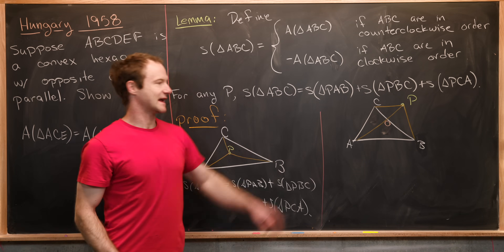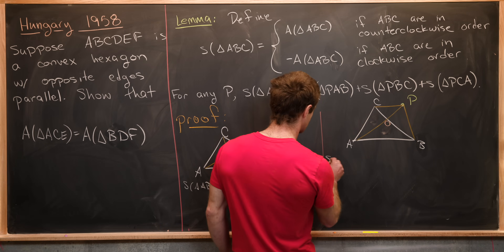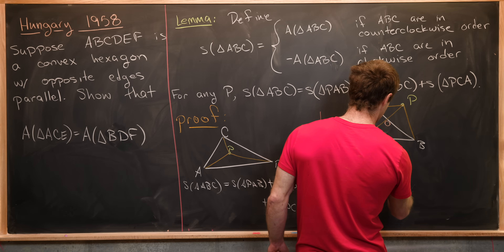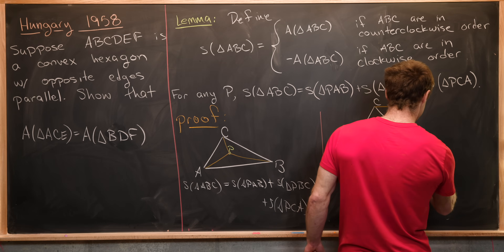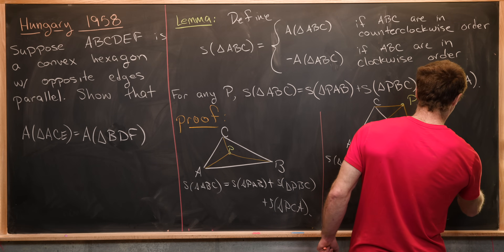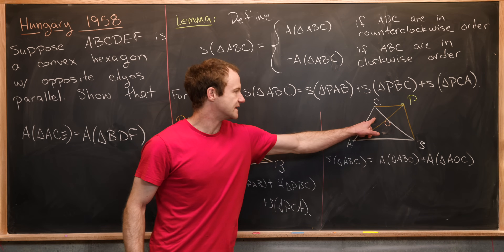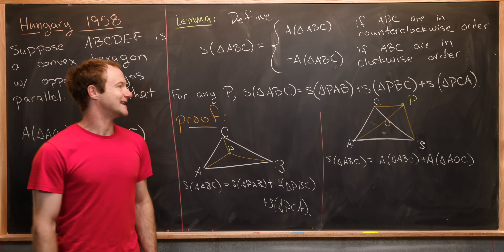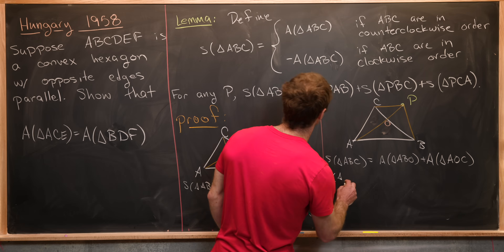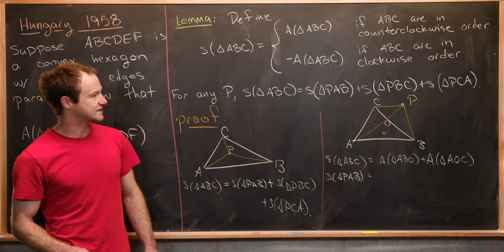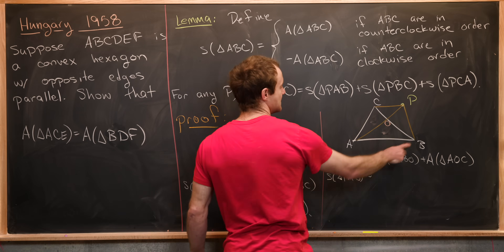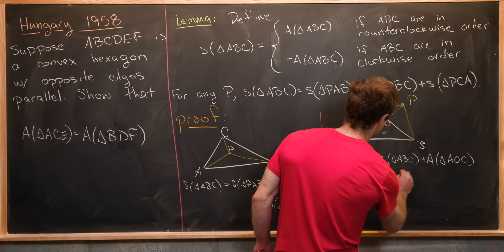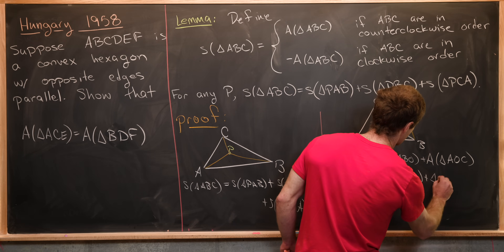We'll calculate the left-hand and right-hand side of the identity and show they are the same. S of triangle ABC equals the area of triangle ABO plus the area of triangle AOC, since those sub-triangles appear in counterclockwise order. Now for S of triangle PAB: since PAB are in counterclockwise orientation, we get the area of triangle ABO plus the area of triangle POB.